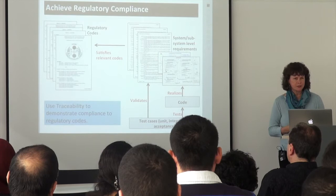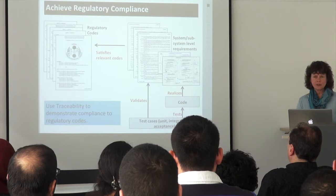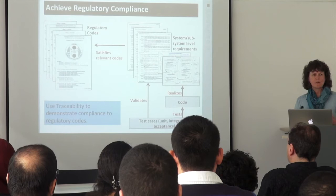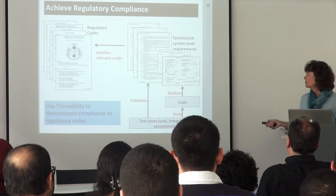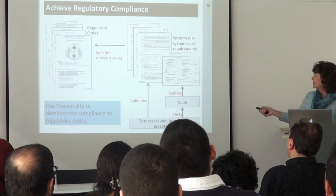Here's an example of using traceability to achieve regulatory compliance. I do a lot of work with Siemens, specifically on positive train control systems. They have many different regulatory codes their systems must comply with, and they have to demonstrate compliance by putting all the traceability links in place — connecting test cases, code, and design to satisfy those regulatory codes. It's about creating a trace matrix, perhaps in a spreadsheet or through an automated tool, that captures relationships between things so we can answer important questions about the system.